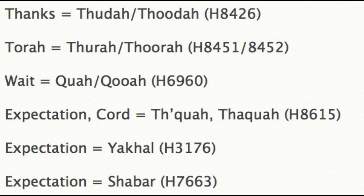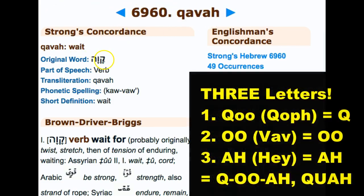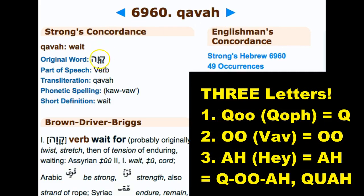We covered the word for expectation in the Living Righteously series — Kuwa or Thukuwa. In Strong's H6960, they pronounce it 'Kavah' meaning to wait, but when we look at it, it has the Ku sound from the Kop, then the U and Ah — giving us Kuwa. So it's pronounced Kuwa, not Kavah.